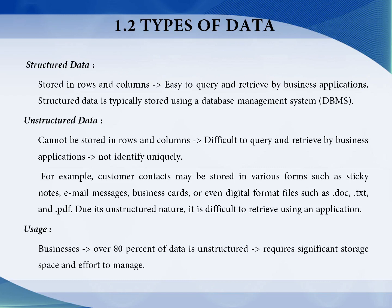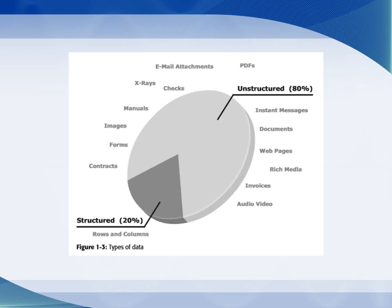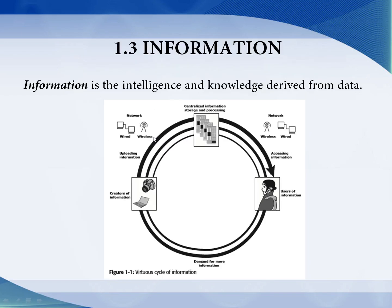According to surveys, over 80% of data is unstructured, therefore we are in need of significant storage space and effort to manage this unstructured data. The diagram shows that over 80% of data is unstructured and only 20% is structured. Examples of unstructured data are audio, video, web pages, documents, PDFs, email attachments, and X-ray images.